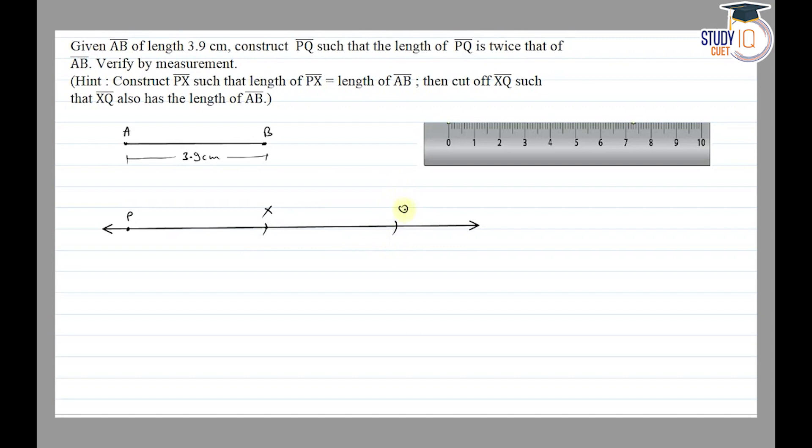So the length is 3.9 and again 3.9 centimeters. So the complete PQ is equal to twice AB. Now by ruler, we will verify the measurement. When we match the ruler to Q, we get 7.8. So line segment PQ is equal to 7.8 centimeter.